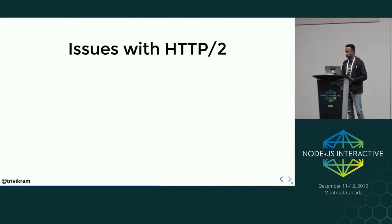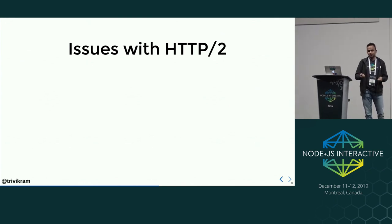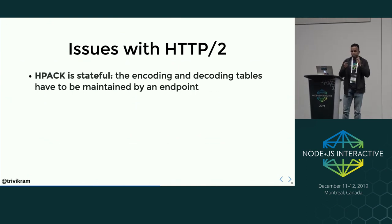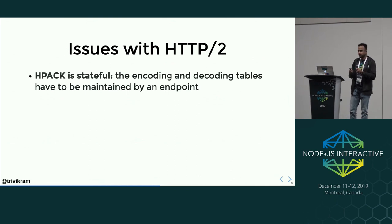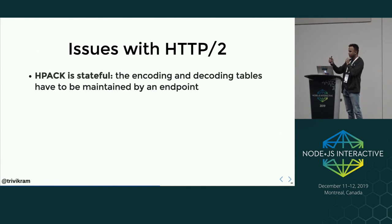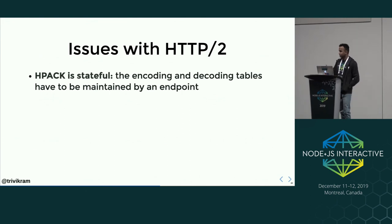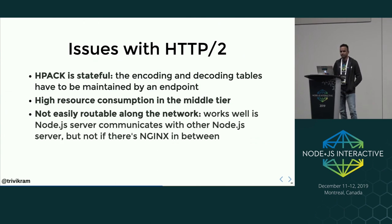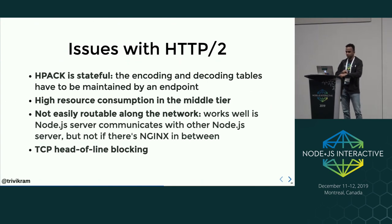Let's see the issues with HTTP/2, because if there were no issues, HTTP/3 would not exist. First, HPACK is stateful — the encoding and decoding tables have to be maintained at each endpoint. Delta encoding is used in header compression, which causes high resource consumption in real time and is not easily routable on the network. The main issue we will discuss is TCP head-of-line blocking.